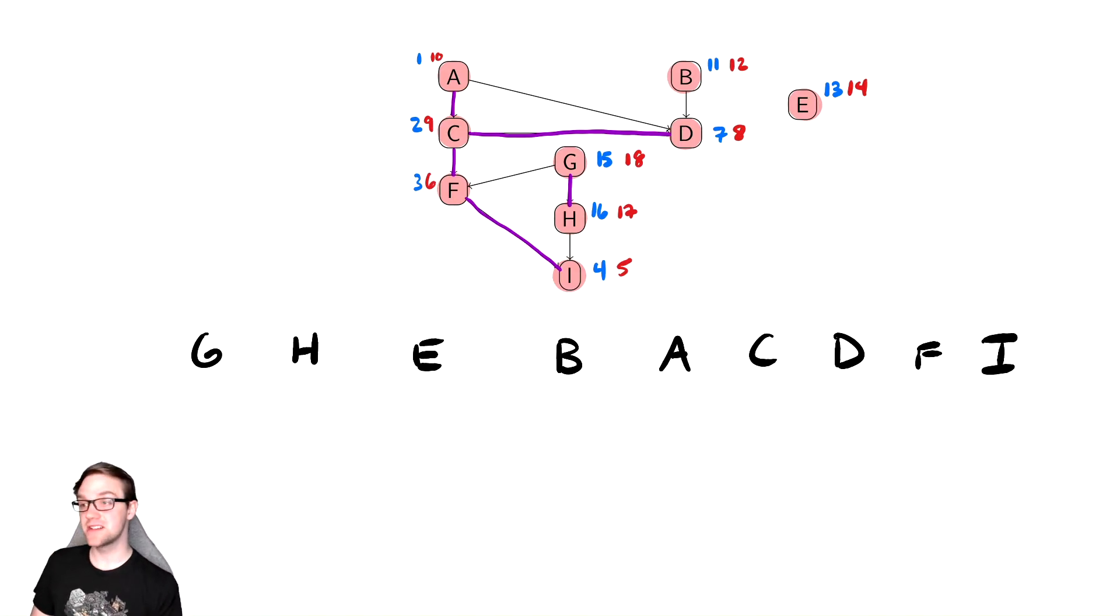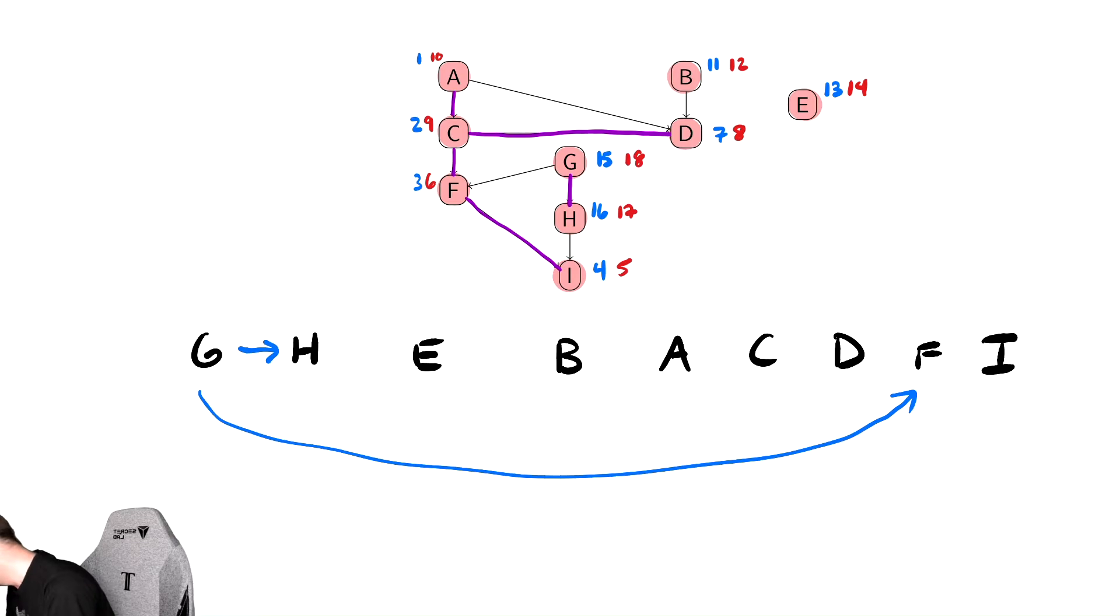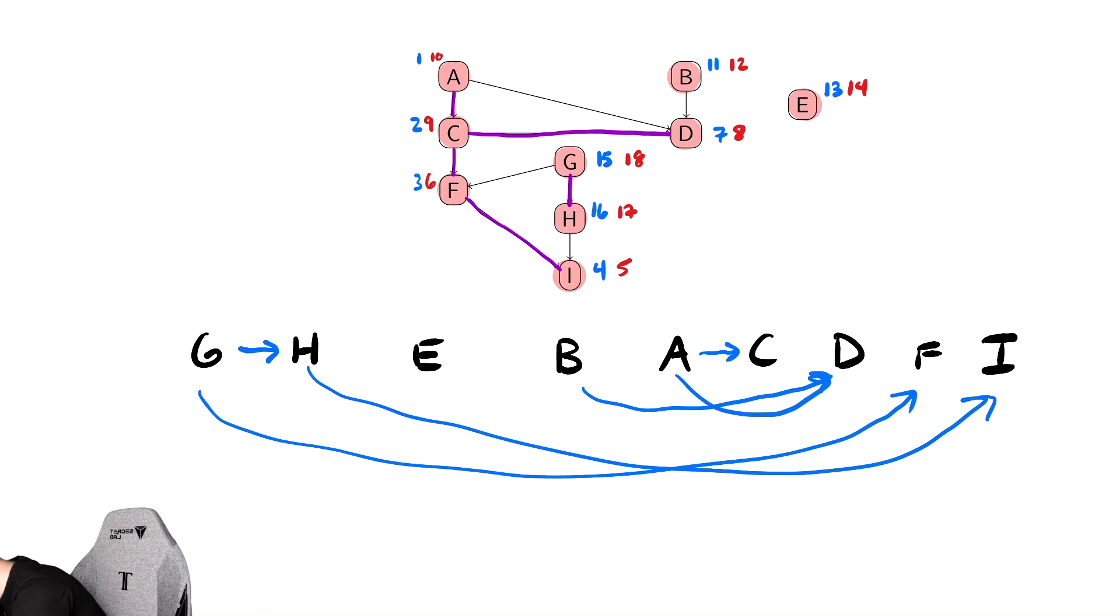And now let's draw in all the edges of this graph. There is an edge from G to H. So, we'll draw these in in a different color. So, G to H. And there's also one from G to F. Next, there is an edge from H to I. So, we draw an edge from H to I. And then we have an edge from E to nothing. We have an edge from B to D. We have an edge from A to C. And from A to D. We have an edge from C to D. And we also have an edge from C to F. From F, we have an edge to I.